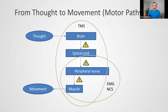On each stage of this signal transferring, it is an electrical signal that can be measured and explored. Here is a small ellipse with EMG (electromyography) and NCS (nerve conduction study) titles. With these techniques, it is possible to examine the muscle and peripheral nerve, and a little bit of the spinal cord and motor nerve.